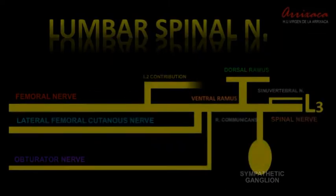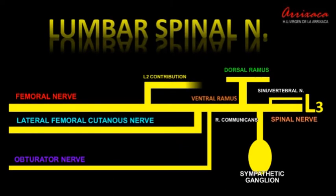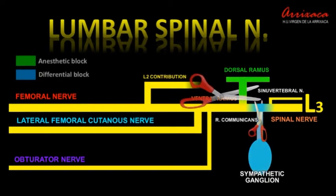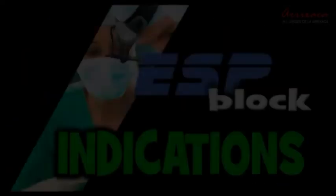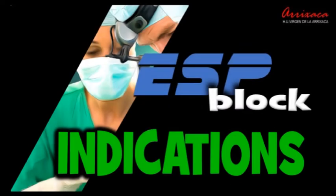The lumbar erector spinal plane block is known to produce a consistent multimetameric blockade of the dorsal rami. It also produces a sectional differential blockade on the ventral rami and the sympathetic chain. It should be noted that evoked potential tests performed during surgery will not be affected by the use of this technique.